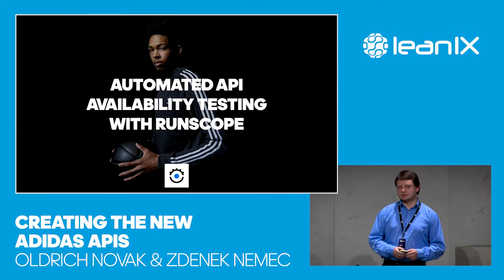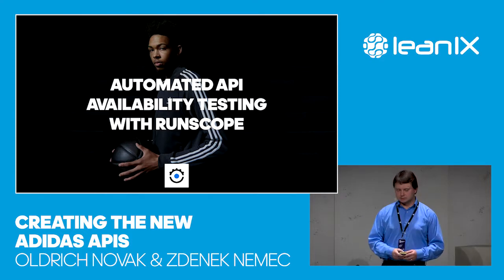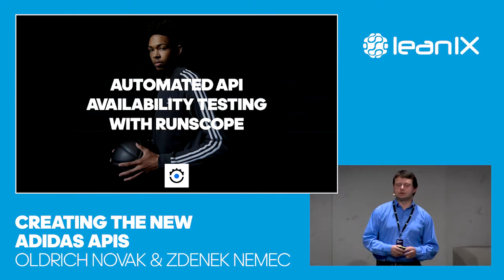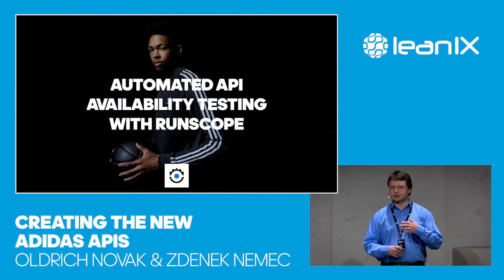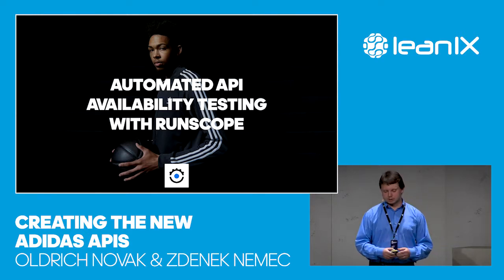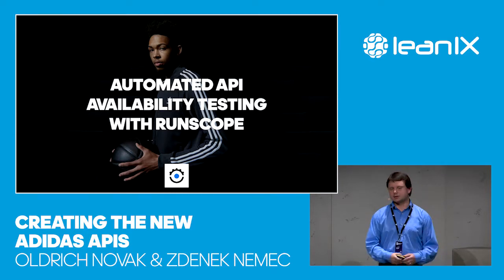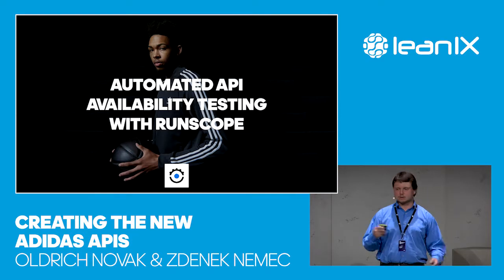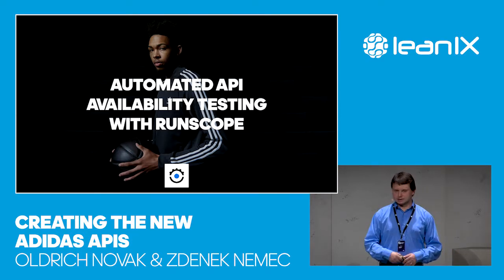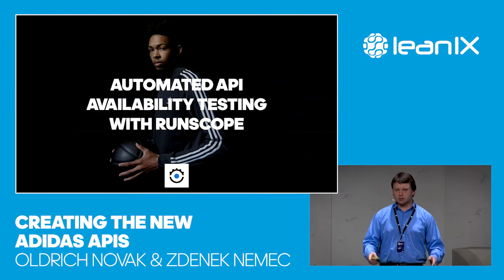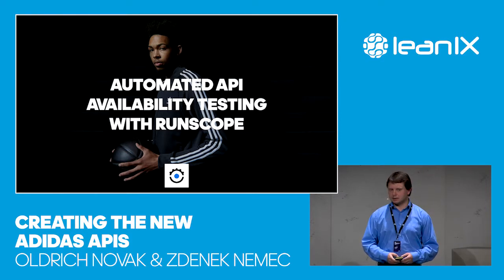It's also important to make sure our APIs are running. We adopted a utility called RunScope, which does ongoing API testing from an operational perspective. It sends requests to every single API we have — for example, every five minutes from different locations around the world like the US and Singapore — and gives us an overview of how APIs are working and what the latency is. If something goes wrong, we are immediately notified and can pick it up right away.